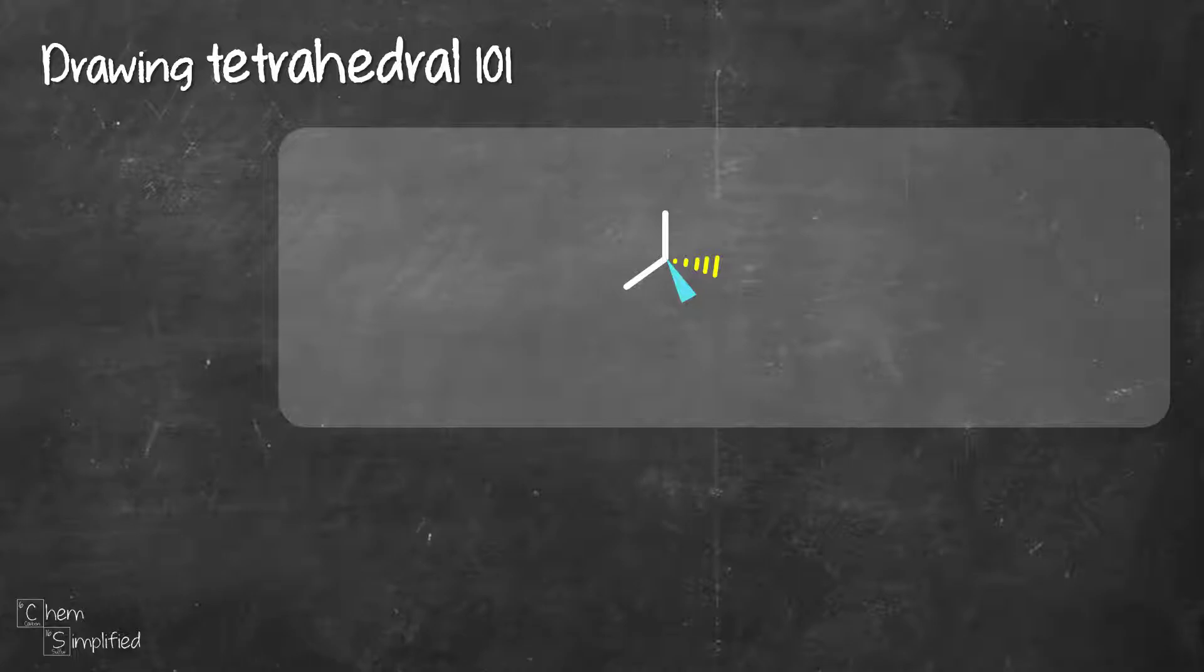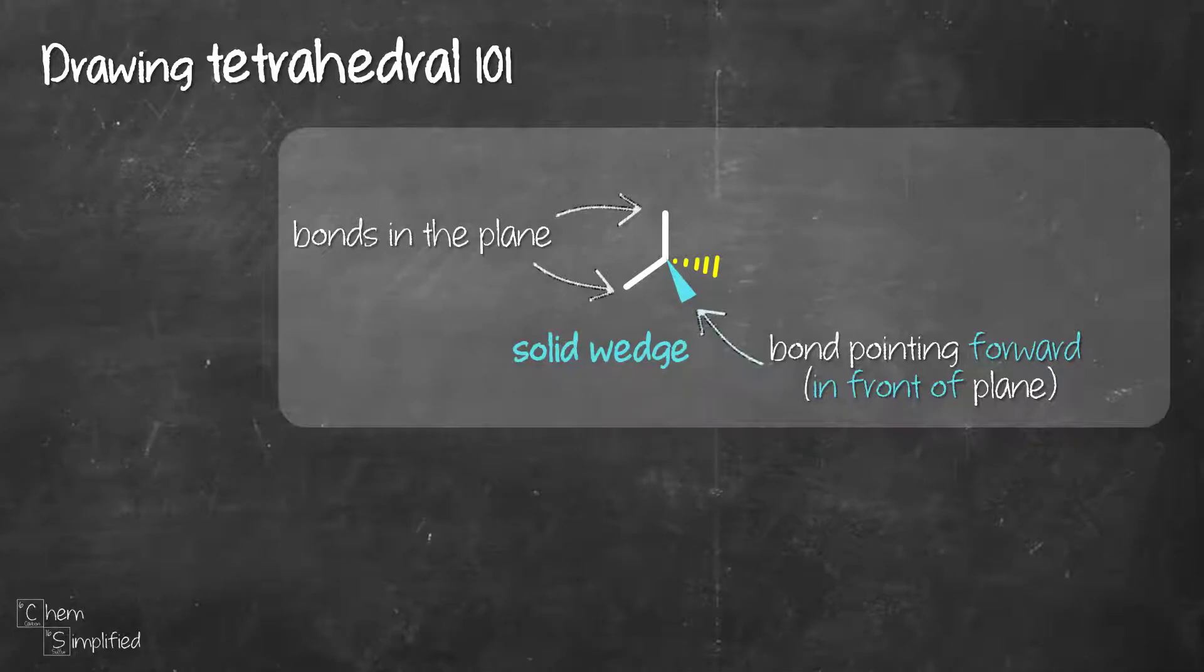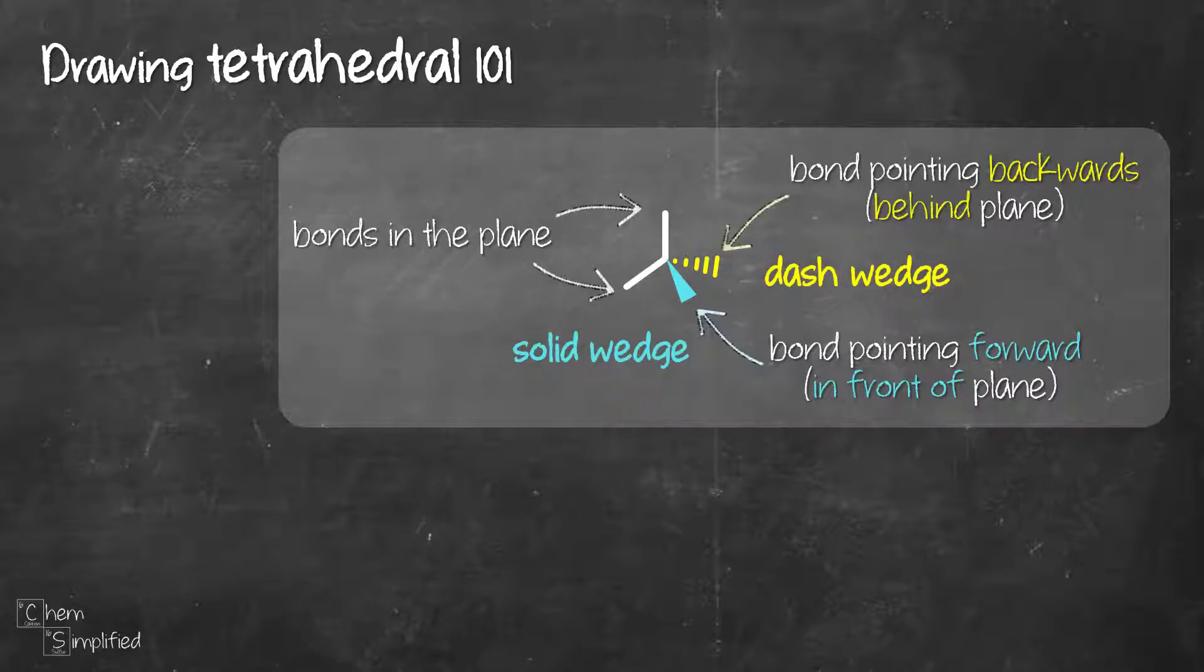The two solid lines represent bonds that are on the same plane as the screen, and then the blue solid wedge represents the bond pointing out of the plane towards us. The yellow dash wedge represents the bond pointing behind the plane away from us.